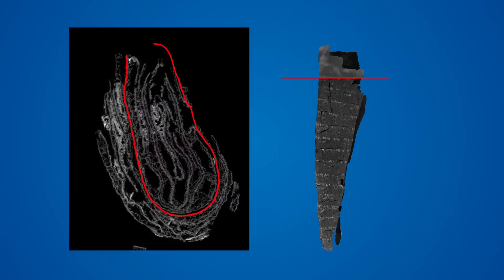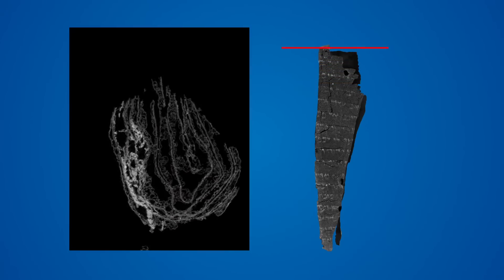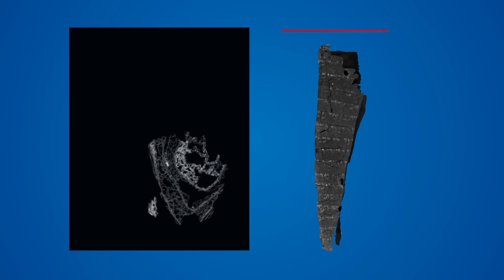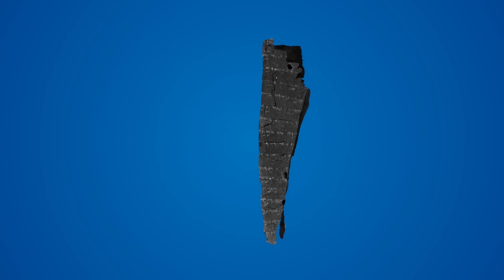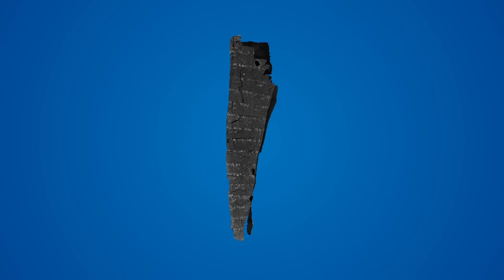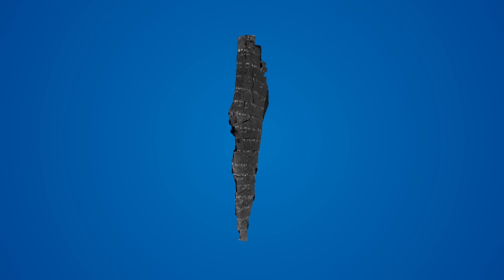This time looking for very bright pixels. Bright pixels indicate regions of dense material, in this case, inks made with iron or lead. We now have a single wrap of the scroll with the text shown clearly on its surface.